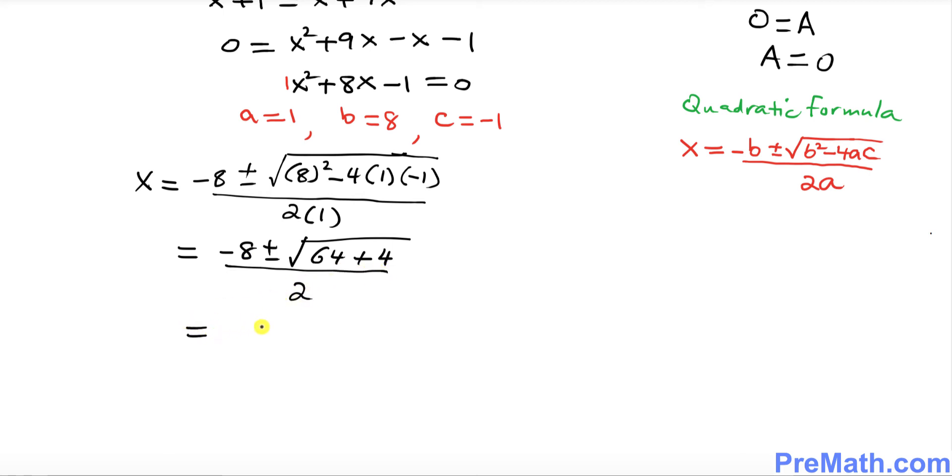So let's go further. Negative 8 plus minus square root of 68 divided by 2. Let me go ahead and simplify this part. Square root of 68, I'm going to put down radical of 68 could be written as 4 times 17.